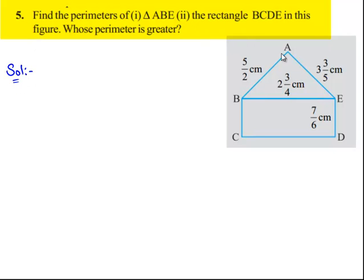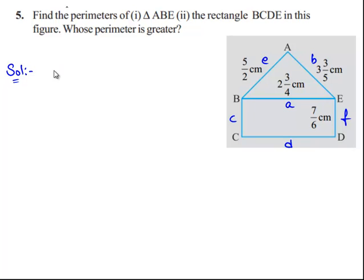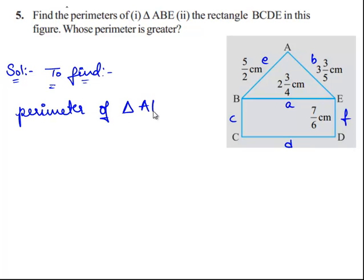So let us first name the sides of the triangle and rectangle. Let the sides of the triangle be A, B, and E. And the sides of the rectangle be A, C, D, and F. So now we need to find the perimeter of triangle ABE.